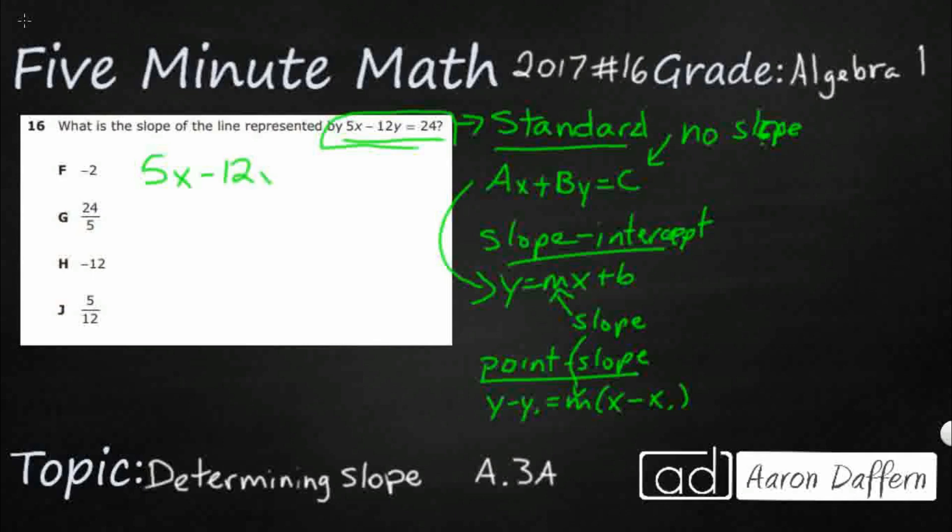So how do we change this standard form into slope intercept form? Well, it's not the hardest in the world. We just need to take a look at our slope intercept form. What do we notice? Y is by itself. No coefficients, no anything. So we need to solve for Y. And if we can solve for Y, put everything else over on the right side, we'll be good.